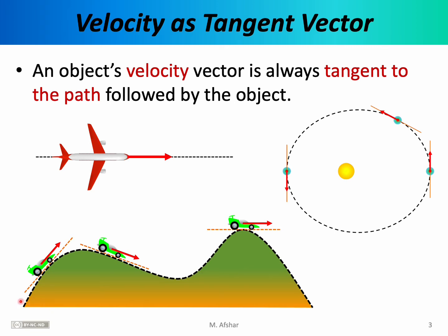Here's a slightly more complicated situation: a hill with a complicated profile and a car driving up and down it. We may not know the speed of the car — for that we'd look at its speedometer — but the direction of the velocity vector at each point is easy to figure out. You draw a tangent line to the path being followed; in this example a dashed black line indicates the path and a dashed orange line indicates the tangent. The velocity vector is simply parallel to that tangent line. We don't know its magnitude, so we don't know the speed, but the direction is always along the tangent to the path — here dictated by the profile of the hill.